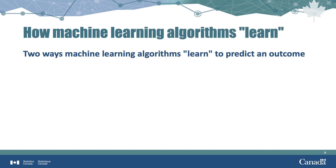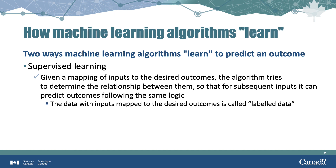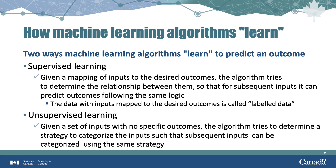Two ways that machine learning algorithms learn to predict an outcome are supervised and unsupervised learning. In supervised learning, we give the algorithm a mapping of inputs to the desired outcomes. The algorithm tries to figure out the relationship between them, so that for subsequent inputs it can predict outcomes following the same logic. An important requirement in supervised learning is to have data where both the inputs and the outcomes are known — this is called labeled data. In unsupervised learning, we don't have data with the inputs and desired outcomes; the algorithm looks for similarities and patterns in the data to determine a strategy for categorizing the inputs, and applies that same strategy to categorize subsequent inputs.